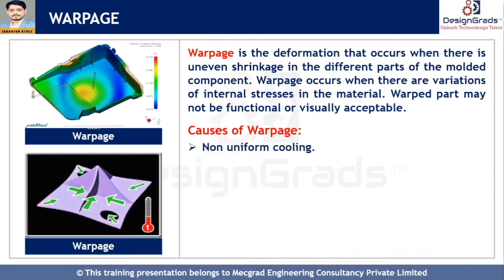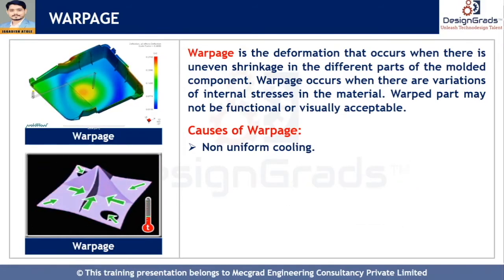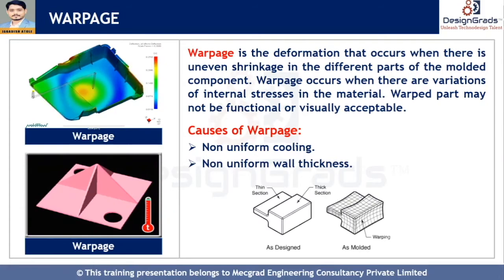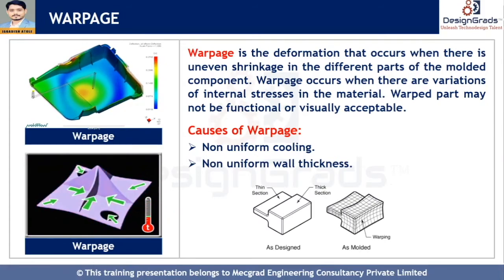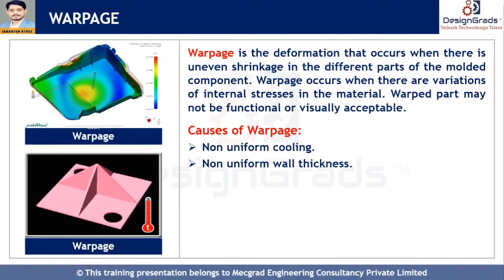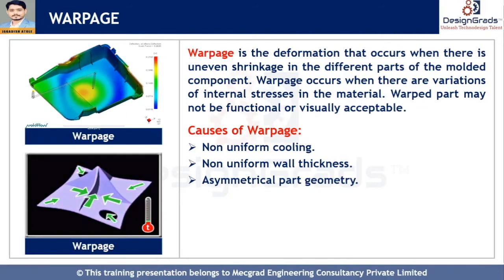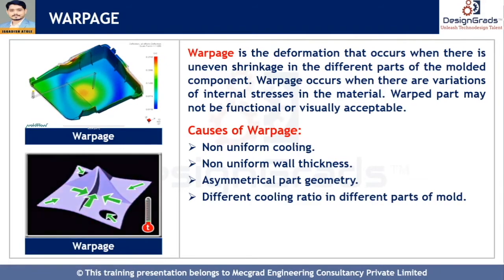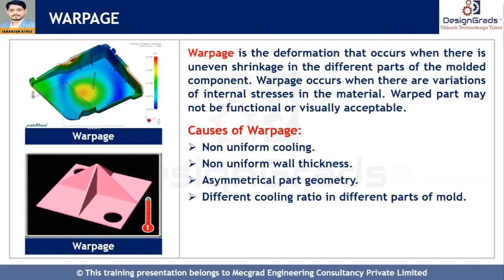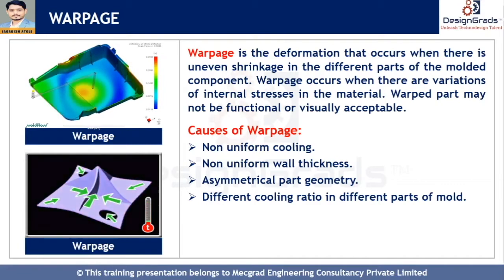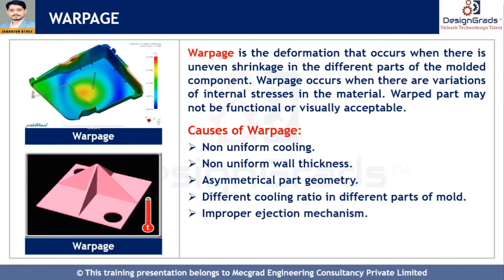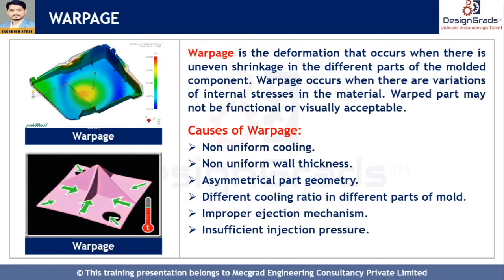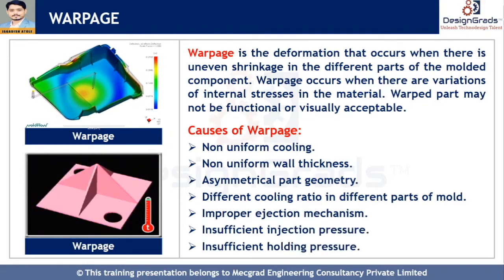Warpage is usually caused by non-uniform cooling of the mold material. Design-related causes include non-uniform wall thickness, which leads to non-uniform cooling and ultimately warpage. Asymmetrical part geometry also leads to warpage during solidification. Different cooling rates in different parts of the mold cause the plastic to cool differently, creating internal stresses, and when these stresses are released, they lead to warpage. Warpage can also be caused by an improper ejection system.